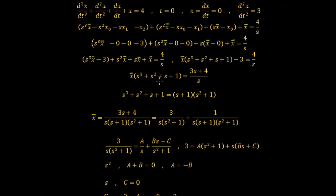Now the denominator term s³ + s² + s + 1 can be factored as (s + 1)(s² + 1). Therefore we can write x̄ = (3s + 4) / [s(s + 1)(s² + 1)], which can be split into 3/[s(s² + 1)] plus 1/[s(s + 1)(s² + 1)].